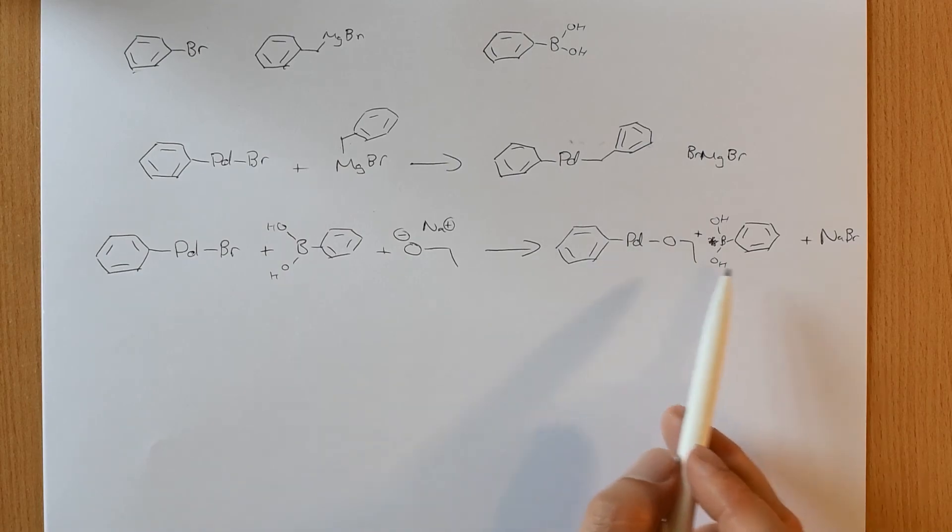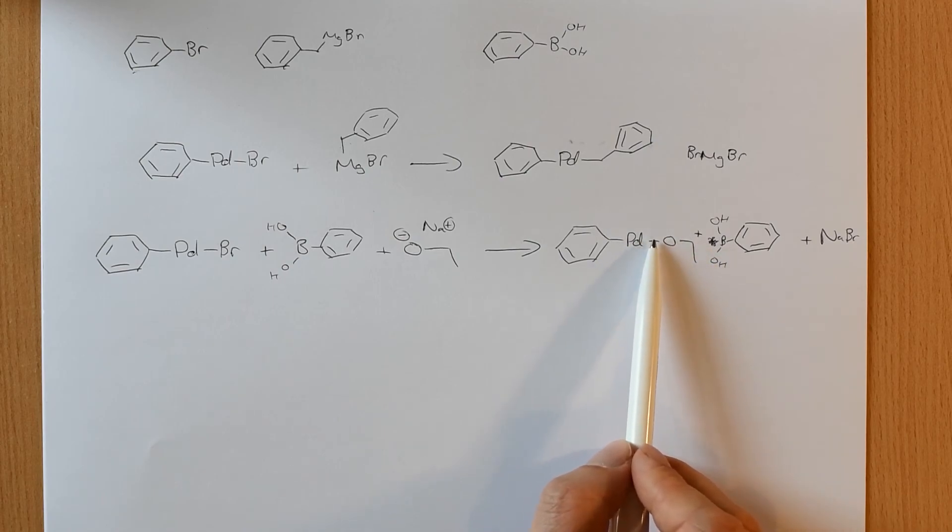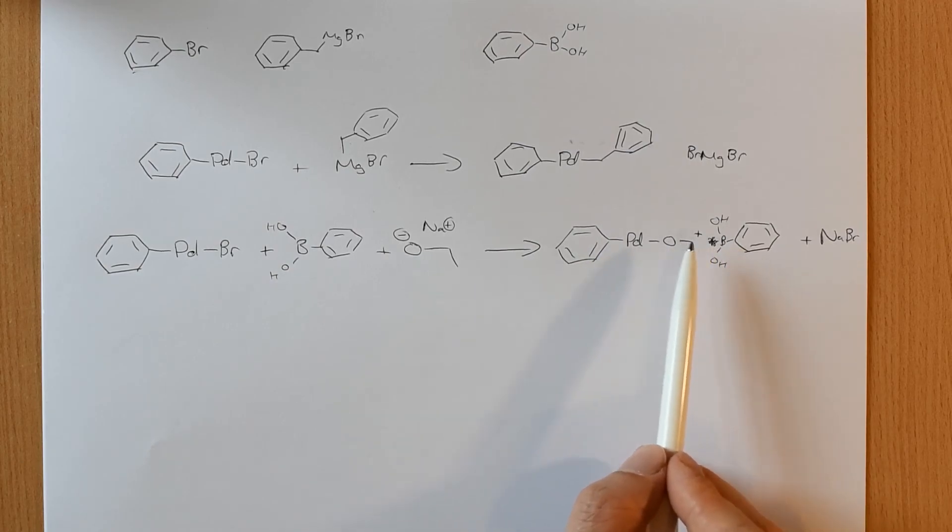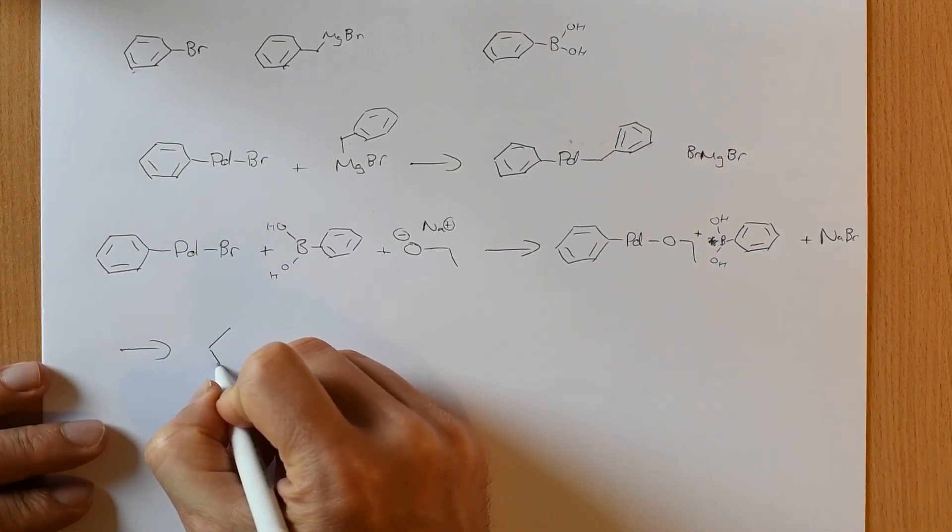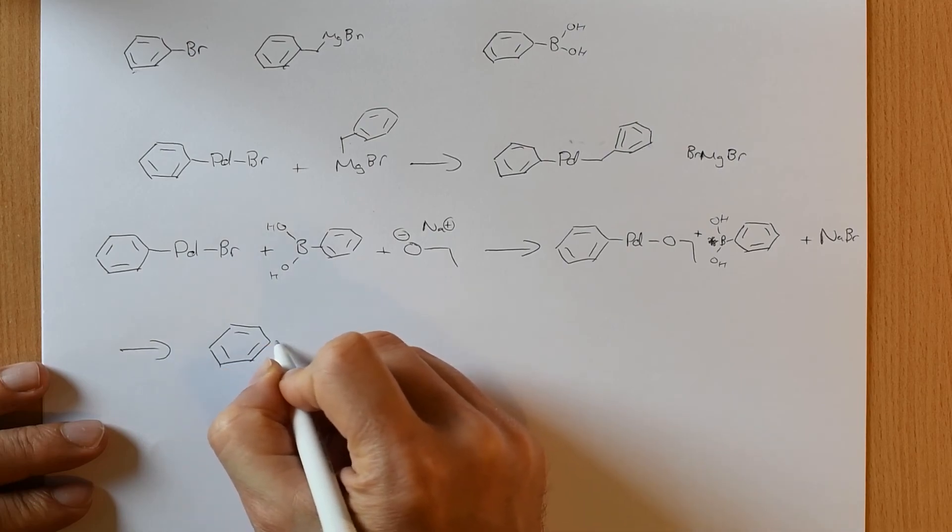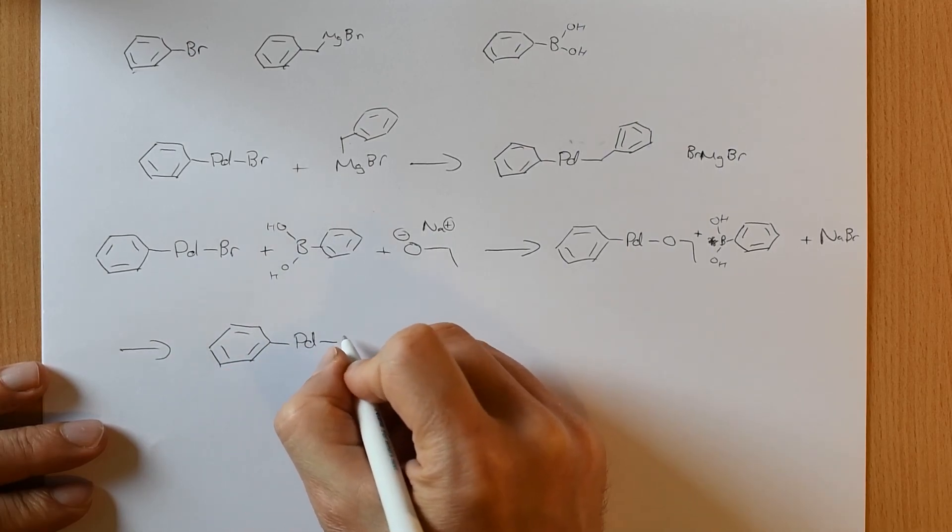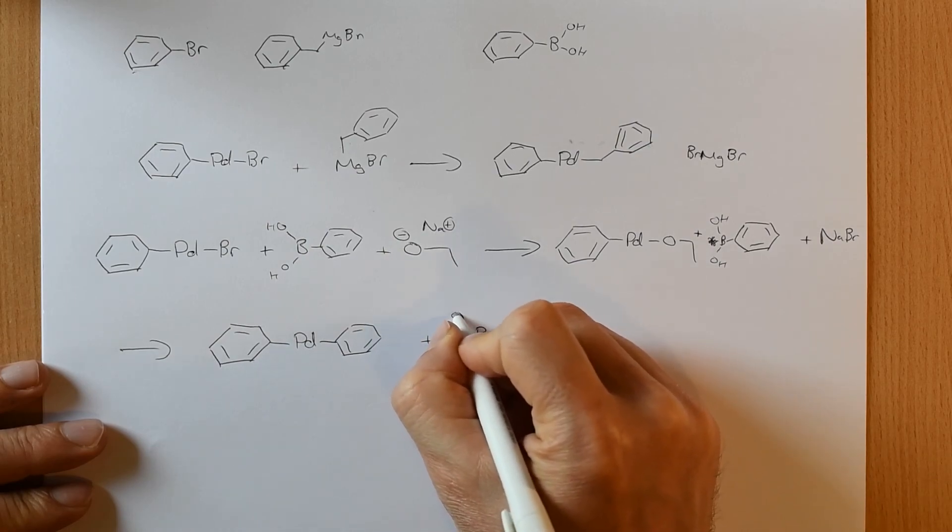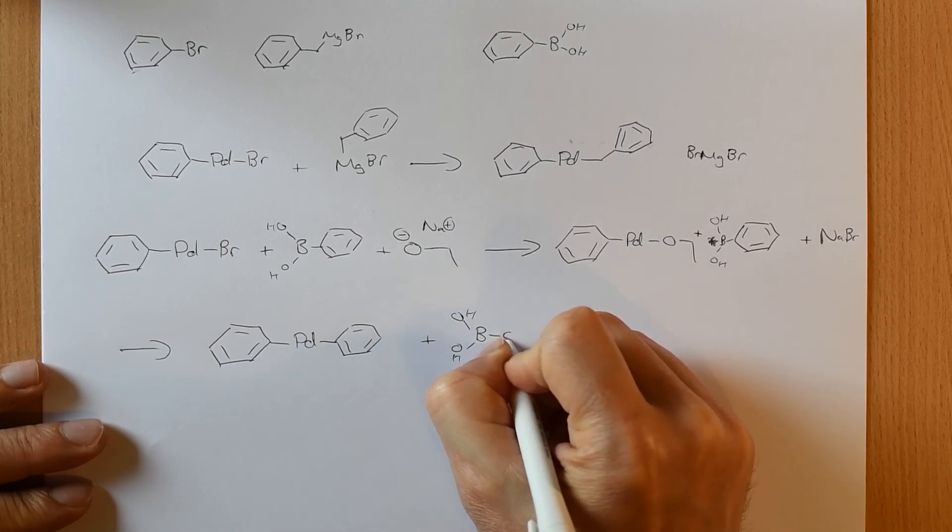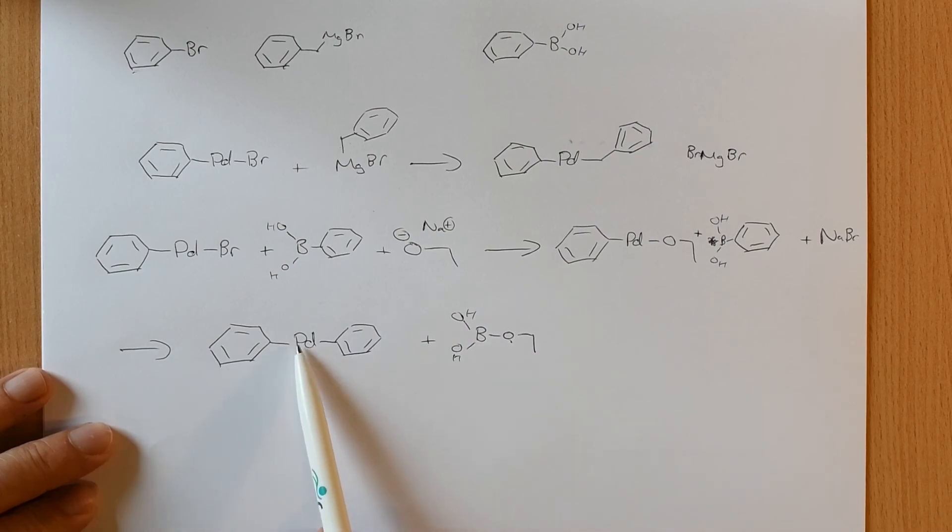Then we get a second transmetallation. So this ethoxide is much better able to transmetallate onto the boron than the bromine was. It'll form a much stronger boron-oxygen bond. So that's exactly what happens. And now you have boron-oxygen bond and a palladium-carbon bond.